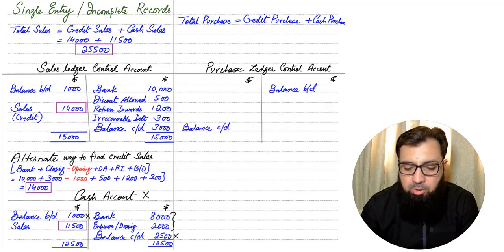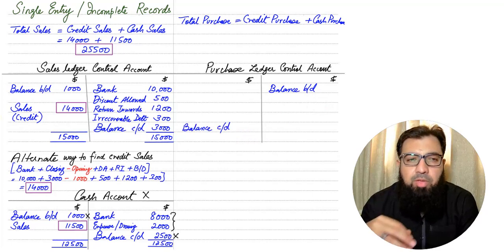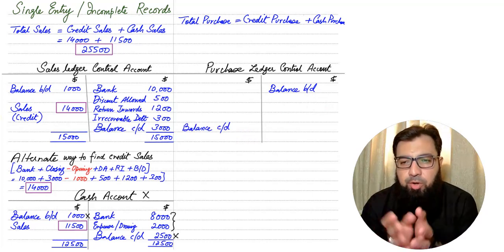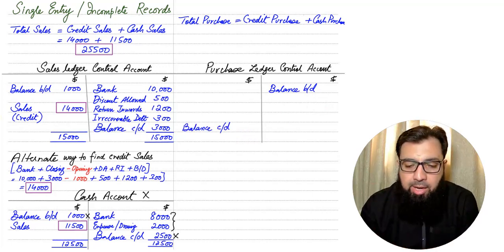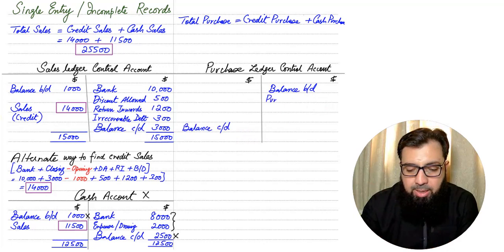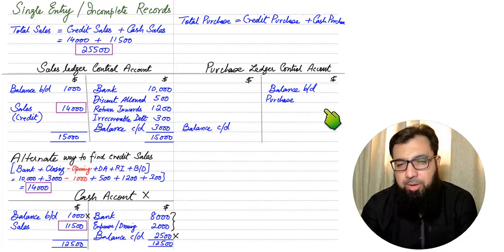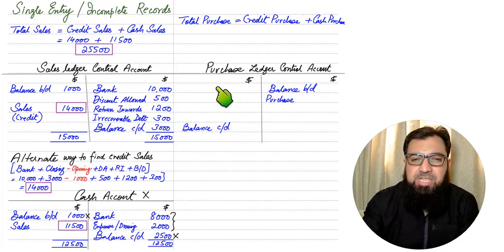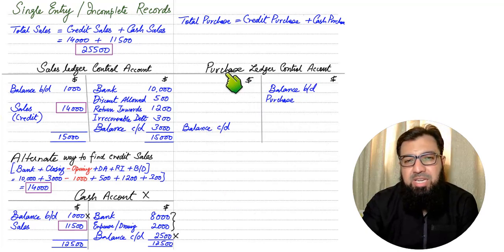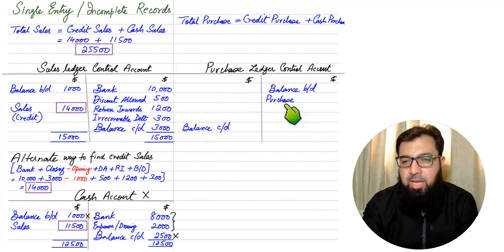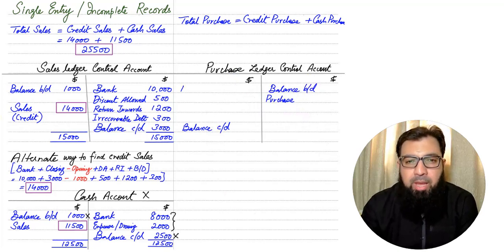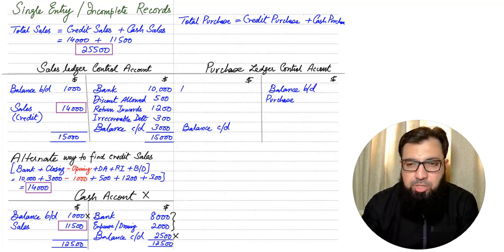Since the opening balance comes on the credit side, the closing balance should come on the debit side. Whenever we buy goods on credit, our liability goes up. The entry is: Purchase Account is debited and Trade Payables (the liability account) is credited. This Purchase Ledger Control Account is essentially a trade payable or creditors account.